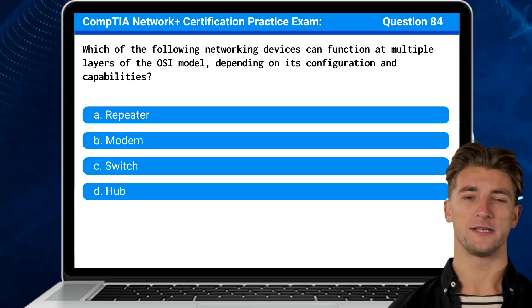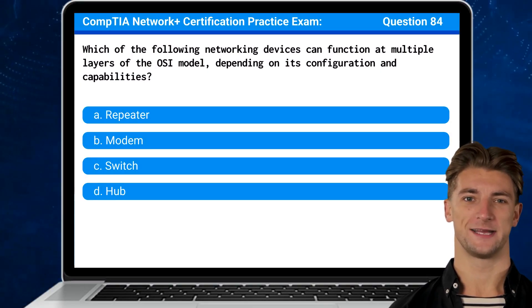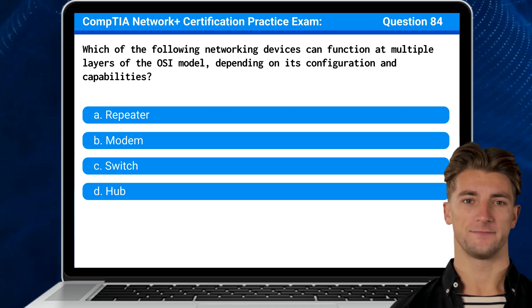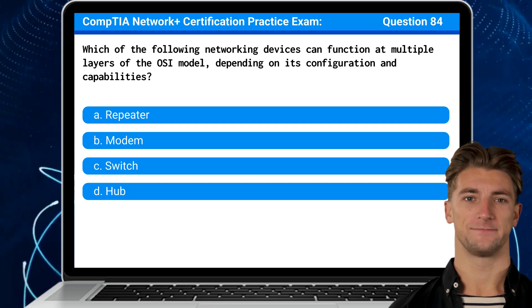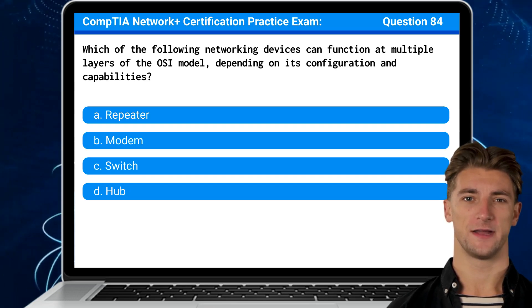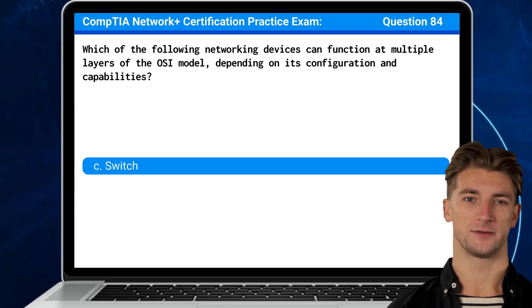Question 84. Which of the following networking devices can function on multiple layers of the OSI model depending on its configuration and capabilities? The answer is C. Switch.